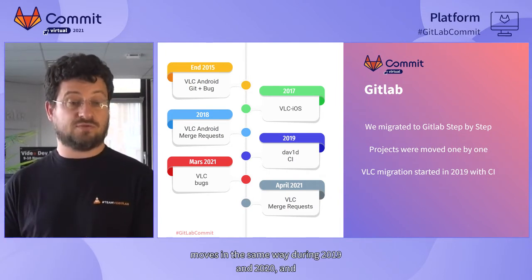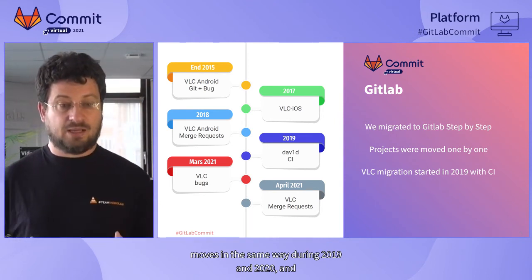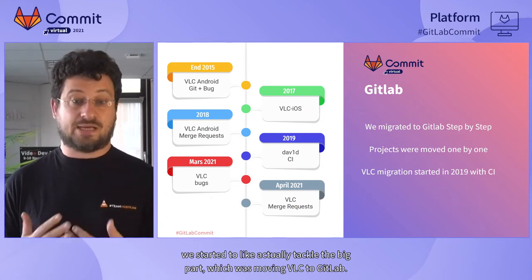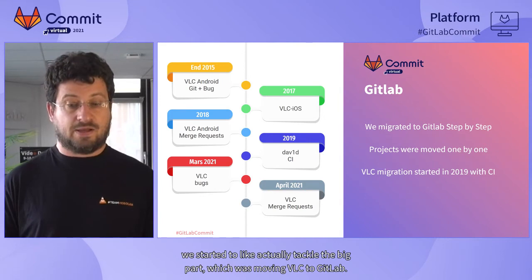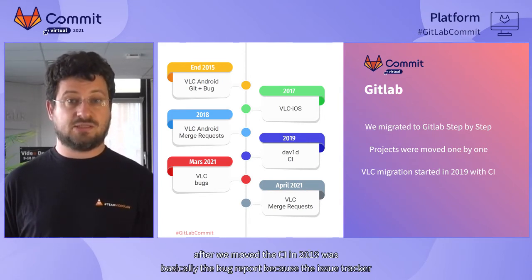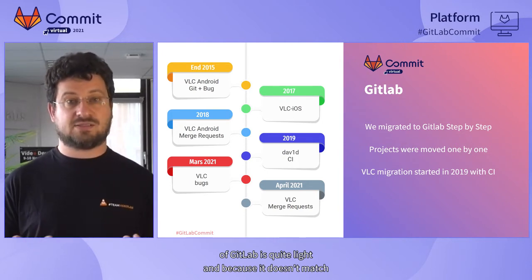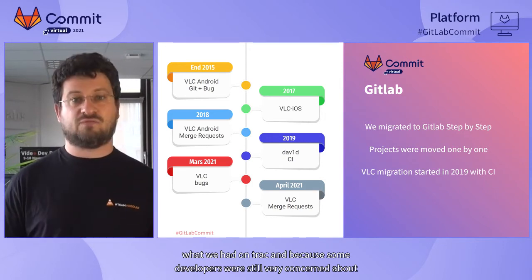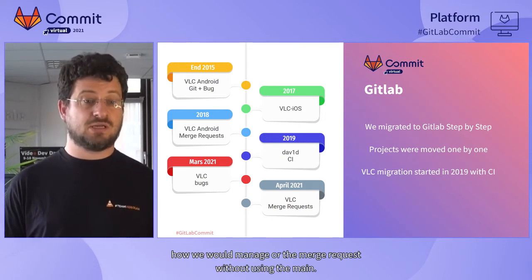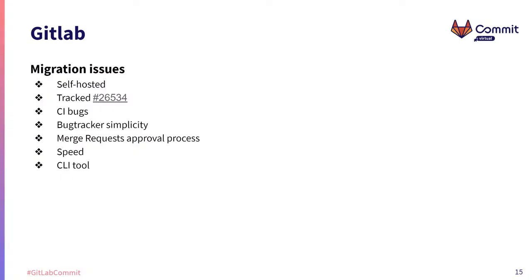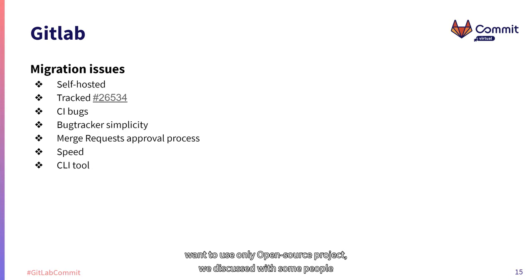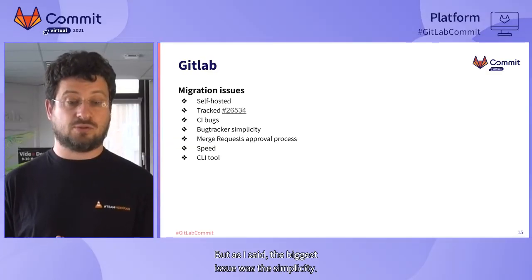Most of the Video LAN projects moved in the same way during 2019 and 2020. In 2020, we started to tackle the big part: moving VLC to GitLab. The biggest issue after we moved the CI in 2019 was basically the bug reports, because the issue tracker of GitLab is quite light. It doesn't match what we had on Trac, and some developers were still very concerned about how we would manage all the merge requests without using the mailing list.